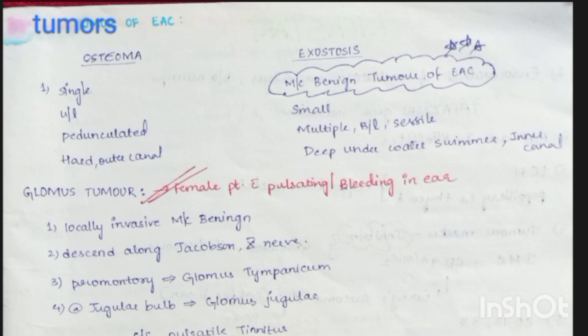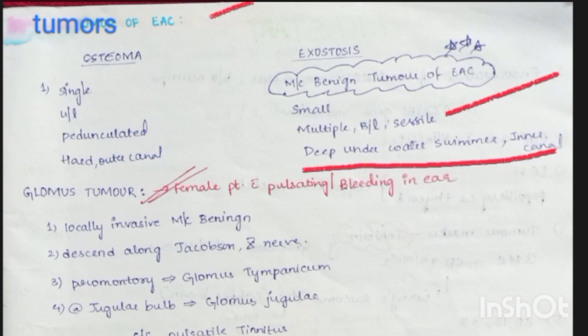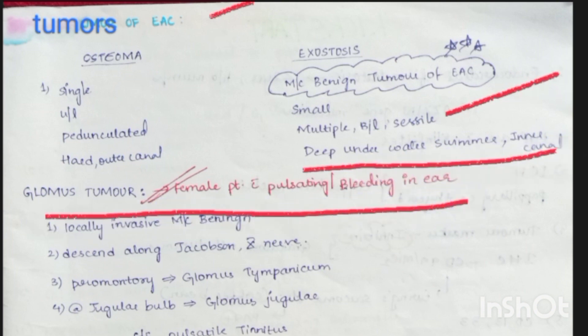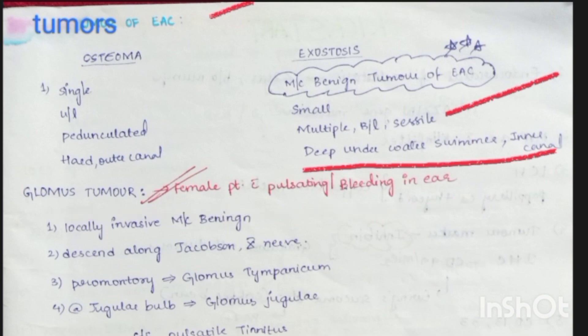Tumors of the external auditory canal: Osteoma — single, unilateral, pedunculated, hard, in the outer canal. Exostosis — most common benign tumor of the external auditory canal; small, multiple, bilateral, found in deep underwater swimmers, in the inner canal. Glomus tumors: seen in female patients with pulsatile bleeding in the ear — locally invasive. Most common benign tumor, arising along Jacobson's nerve (9th) and Arnold's nerve (10th).